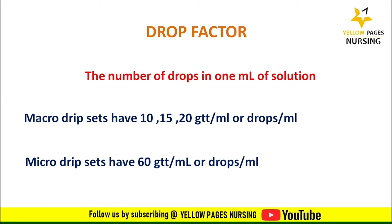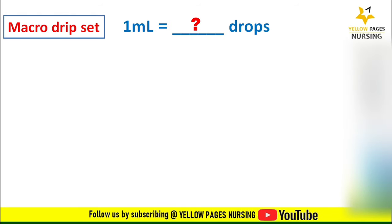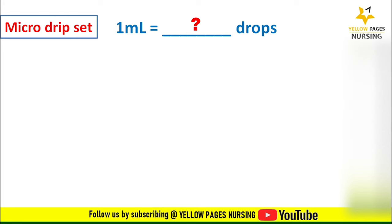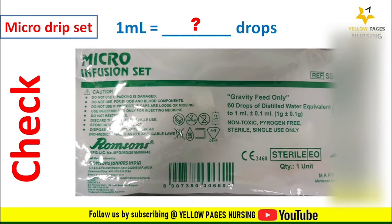Clinically, identifying the drop factor for a macro drip set is very easy — when we look at the back cover of the infusion set it is clearly mentioned. For example, in this picture, 20 drops of distilled water is equivalent to one ml, so the drop factor is 20. Similarly for a micro drip set, this image shows 60 drops equivalent to one ml, giving a drop factor of 60. For exam purposes, the drop factor will be clearly mentioned in the question.